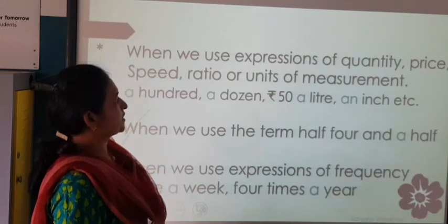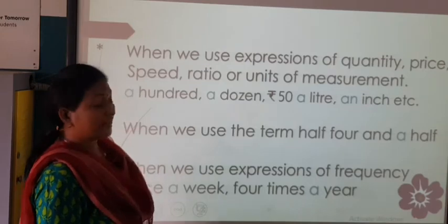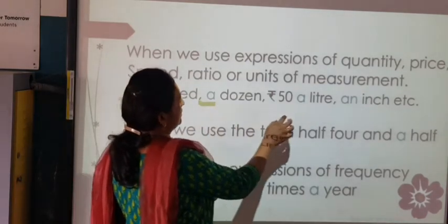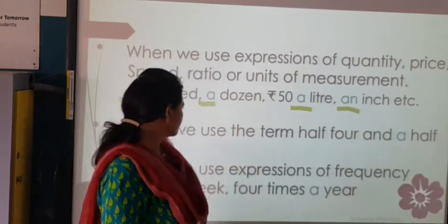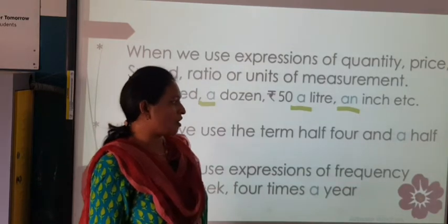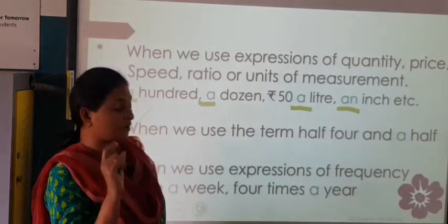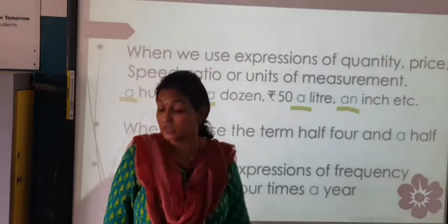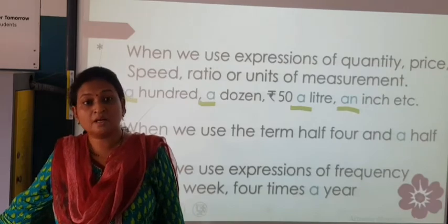When we use expressions of quantity, price, speed, ratio, or units of measurement, we use the article. For example: 'a 100 rupee note', 'a dozen', 'rupees 50 per liter', 'an inch'. When we use the term 'half' — 'four and a half', 'three and a half' — 'a' will be used. When we use expressions of frequency — 'once in a week', 'four times a year' — in that case also you will be using the article.